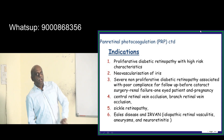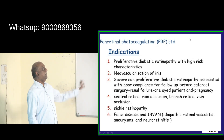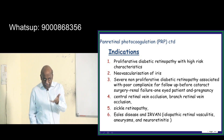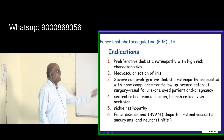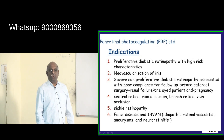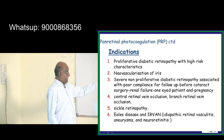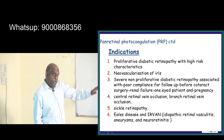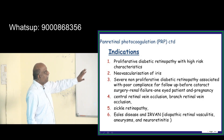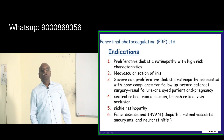Summarizing pan-retinal photocoagulation indications: number one, proliferative diabetic retinopathy; neovascularization of iris called rubeosis iridis; and even severe non-proliferative diabetic retinopathy where there is poor compliance for follow-up.